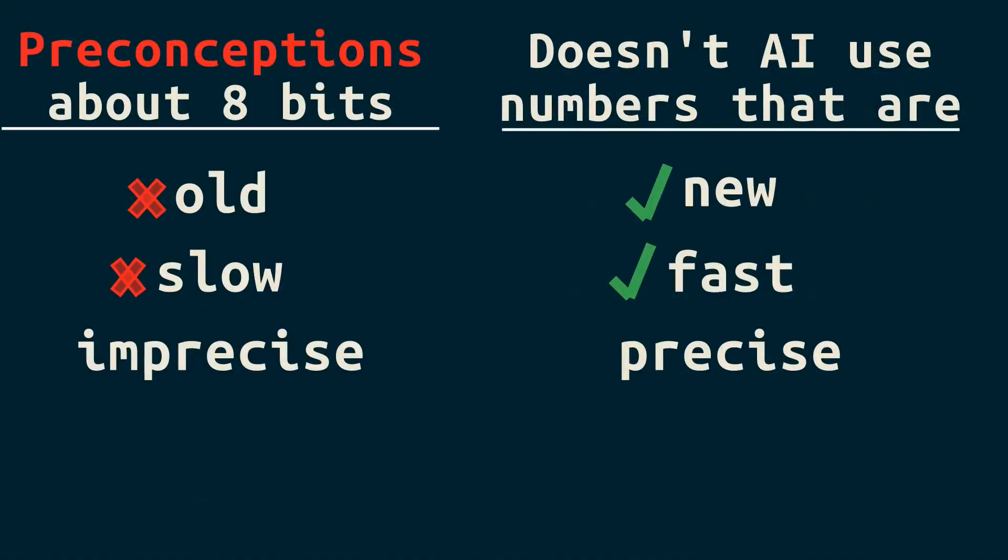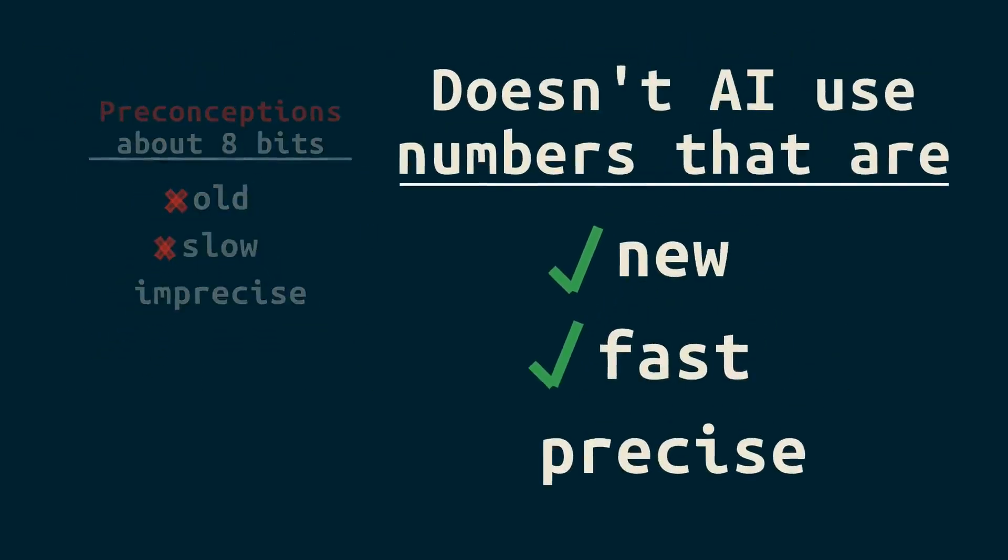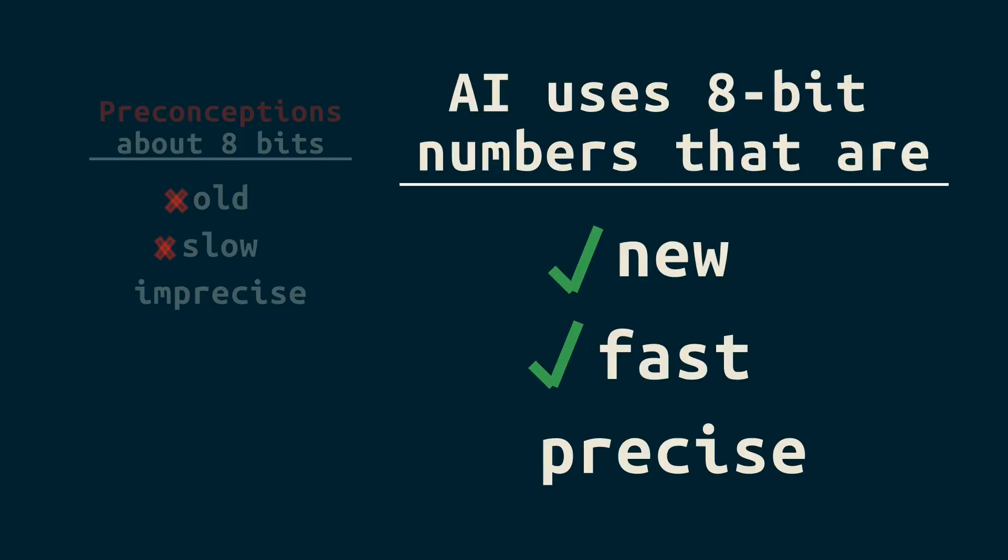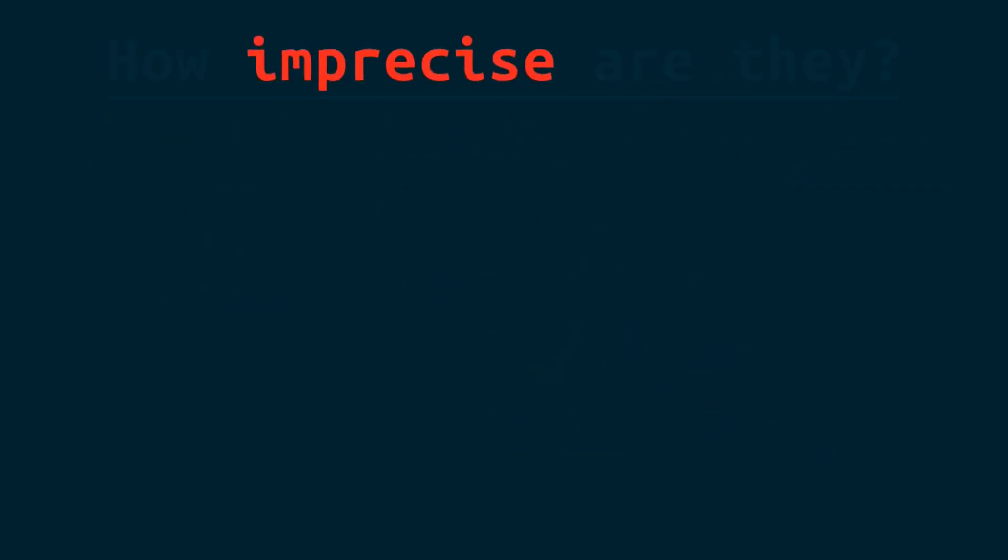I told you in the intro that only one of these, and two of these, were true. So you can see that AI uses 8-bit numbers that are fast, new, and imprecise. But how imprecise are they?